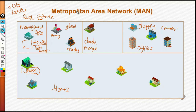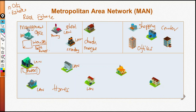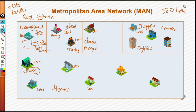This is called a Metropolitan Area Network — it's a bigger network that contains interconnected local area networks. Each house has a local area network; there's one for the secondary school, one for the management office, one for the church, one for the shopping center, and each office inside has its own local area network. This area could have around 500 local area networks from different homes, schools, and offices. The distance can range from 5 to 50 kilometers, but how it's organized is more important than the distance.